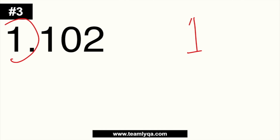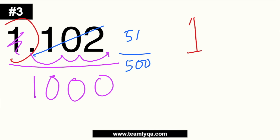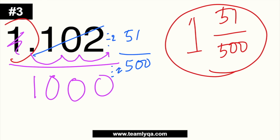Number 3 has a bigger number, but don't be threatened — same process. Set aside the whole number 1 immediately. Now work with 0.102: put 102 over 1. There are three decimal places, so add three zeros: 102 over 1,000. Divide both by 2: 51 over 500. Now, 51 is divisible by 3 but 500 is not, so we can't reduce further. The final answer is 1 and 51/500.